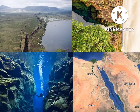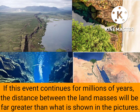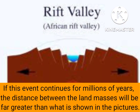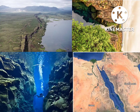I want you to analyze the photographs of rift valleys and ocean ridges. What have you observed? All pictures show a fissure or crack between two land masses. This indicates that the plates are moving away from each other. If this event continues for millions of years, the distance between the land masses will be far greater than what is shown in the pictures. In this case, the plates are forming a divergent plate boundary.